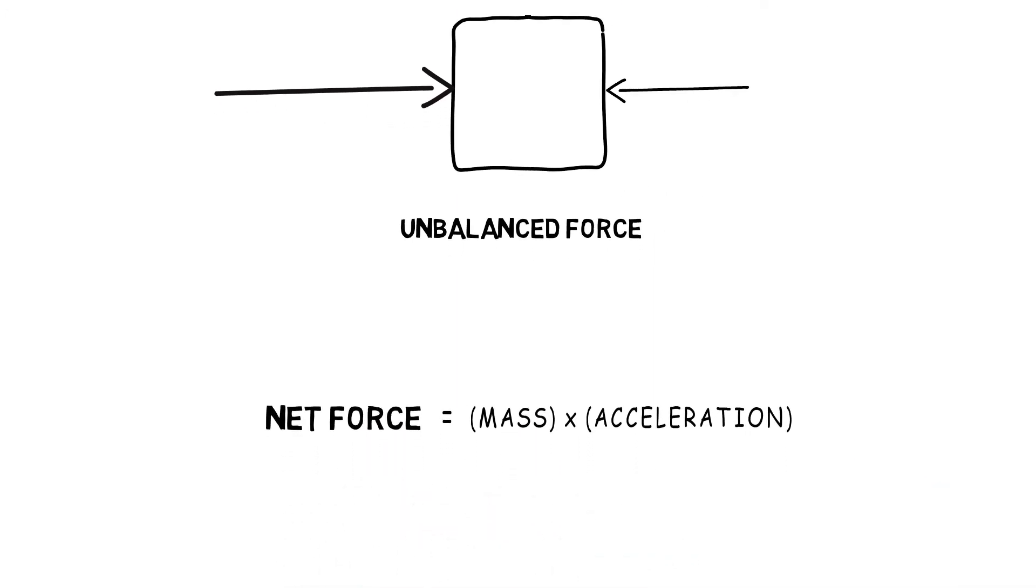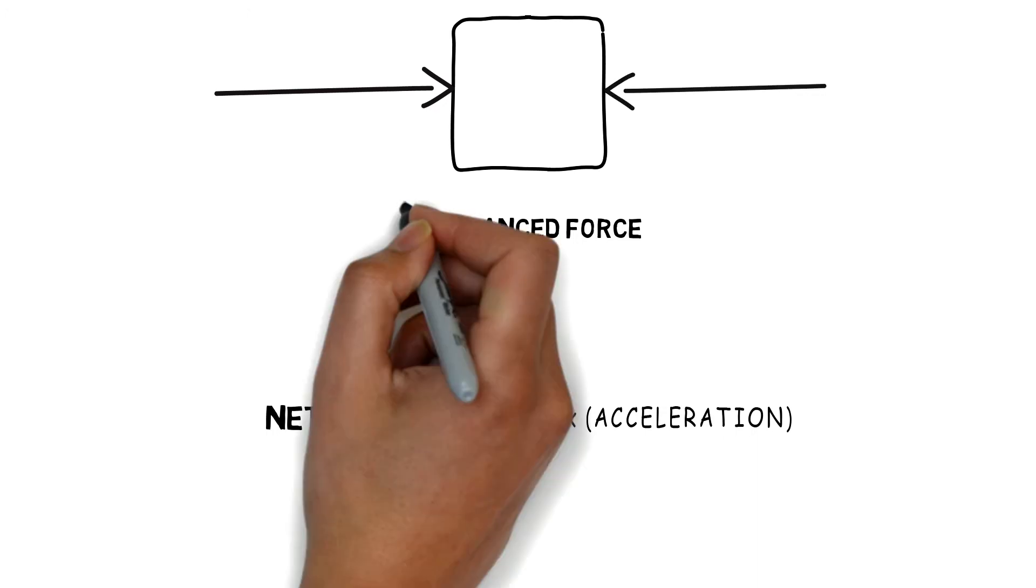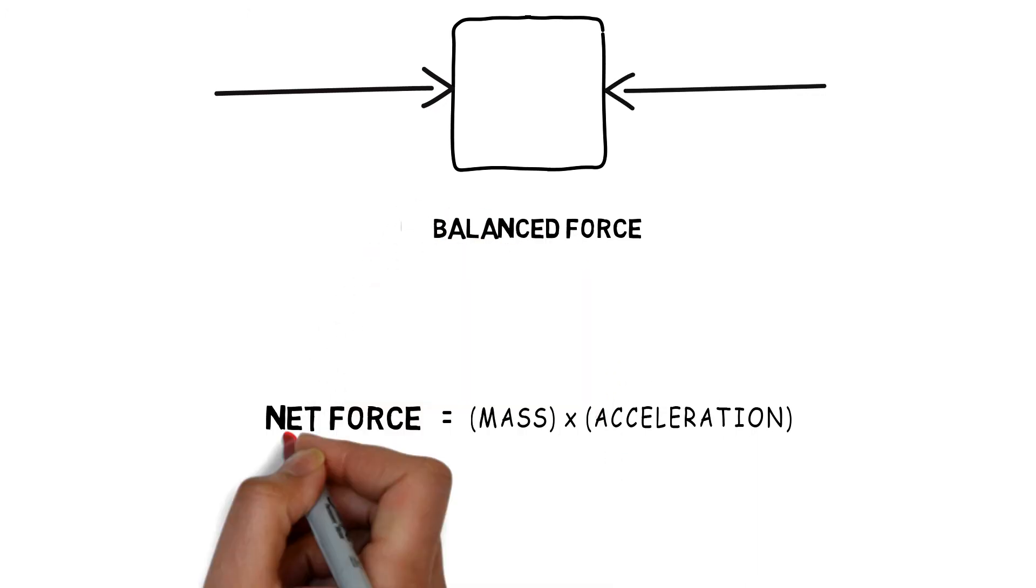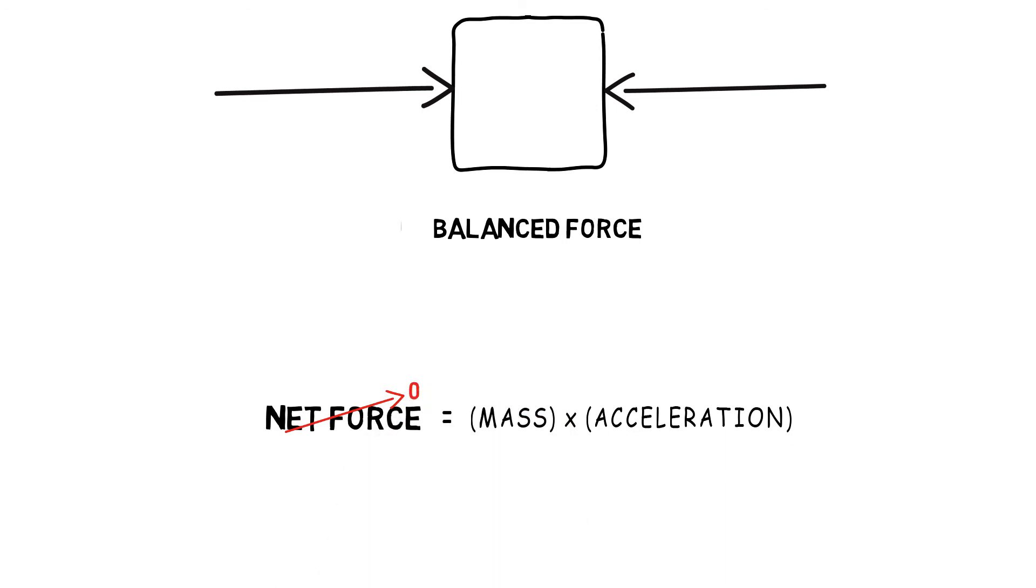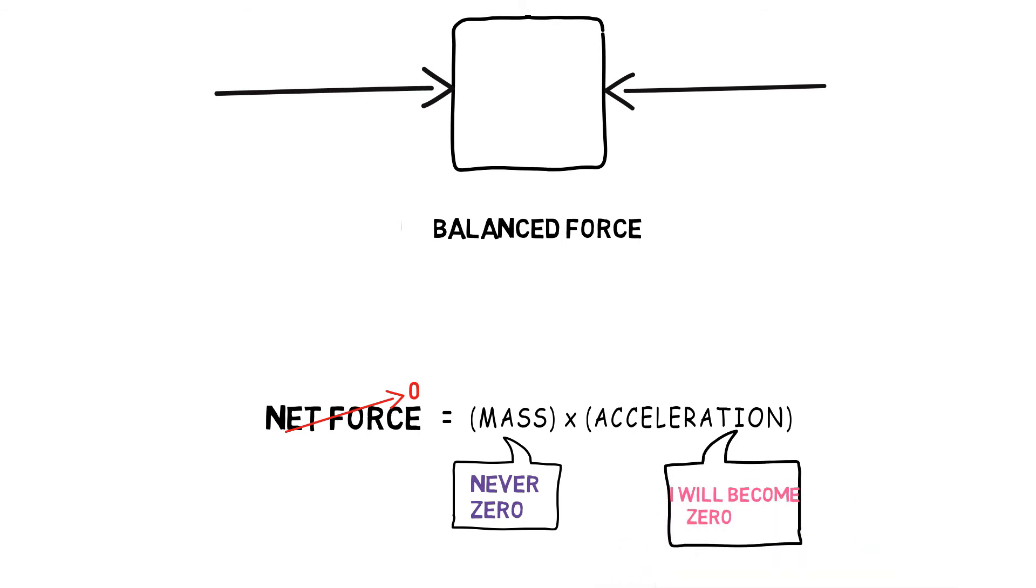But if the body is in equilibrium, it would mean that the net force acting on body will be zero, making the equation as mass times acceleration equals zero. As mass is a constant term for a body and can never be zero, it would mean that the acceleration will have to be zero.